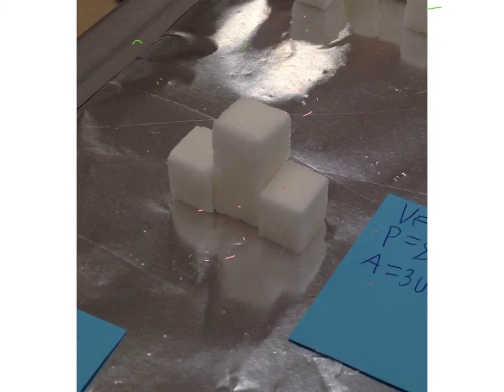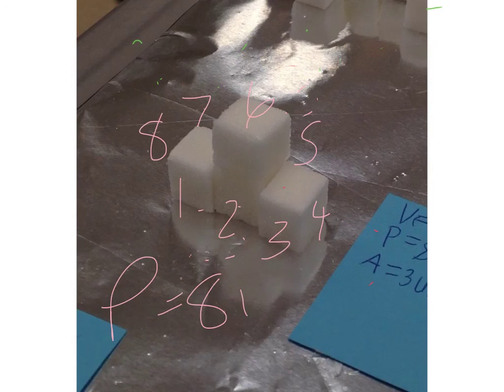All right. We've got one, two, three, four here, five, six, and seven are in the back. And then eight on the side. So perimeter is equal to eight units. And it's linear, so we don't need an exponent of two or three.